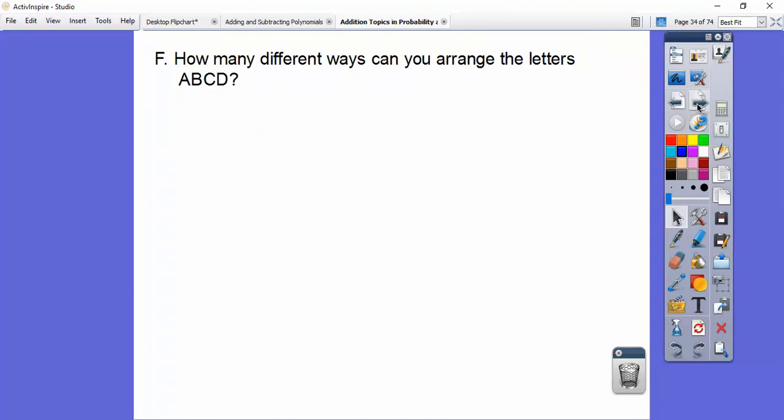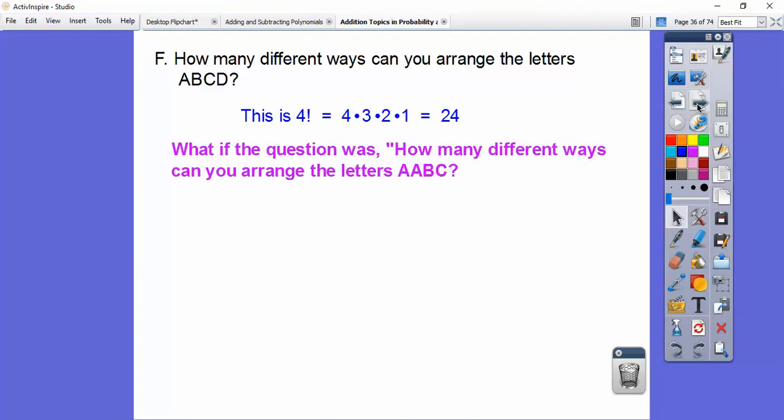How many different ways can you arrange the letters A, B, C, D? Well, there's four letters, so that would be 4 factorial, which is 24. Well, what if the question was A, A, B, C? Well, that leads us into this formula here.